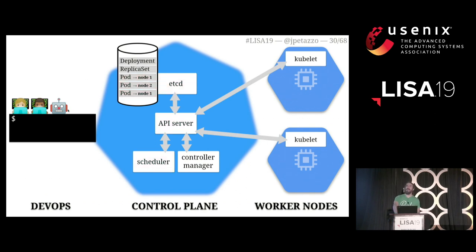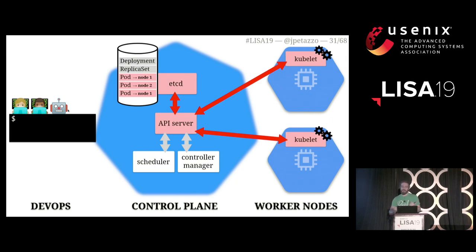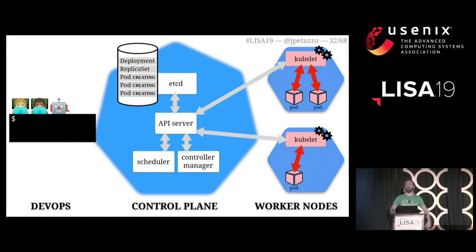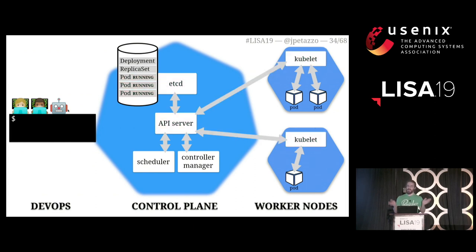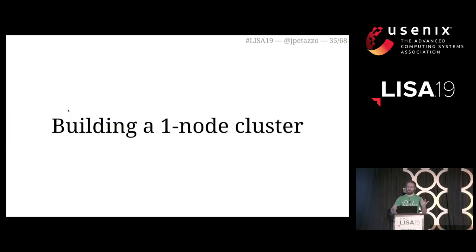The kubelets tell the API server 'I'm working on it,' so the containers show up as 'creating.' Then kubelet does a bunch of network things, pulls images, et cetera, and eventually reports back to say 'the pods are running.' We haven't really talked about networking, but this gives you the big picture — 19 pictures — of what happens when we create a deployment on Kubernetes.